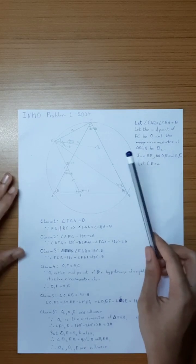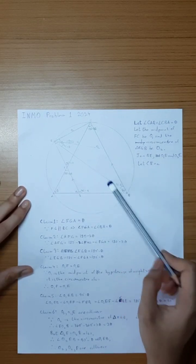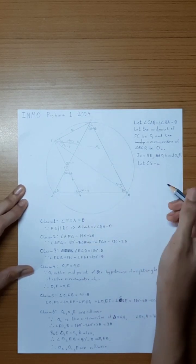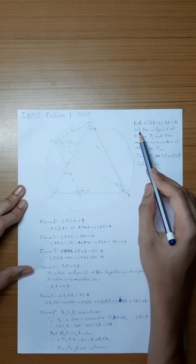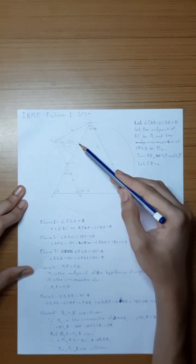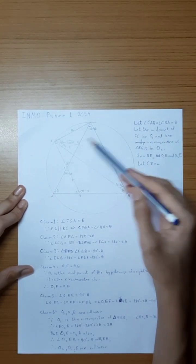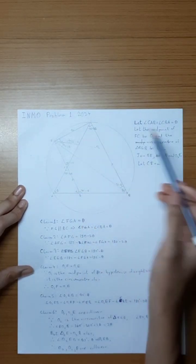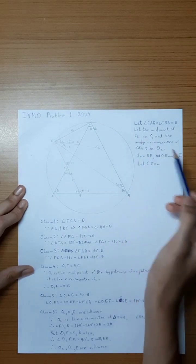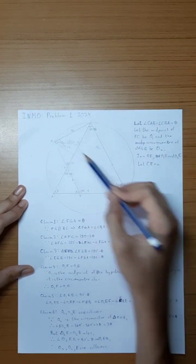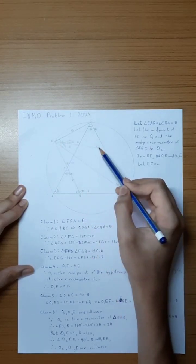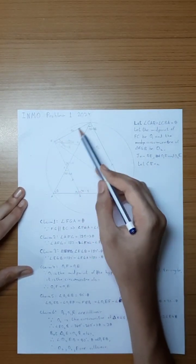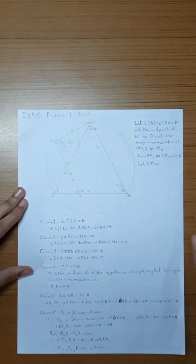Let us assume that angle CAB, which equals angle CBA, is equal to theta as shown in the figure. Let the midpoint of FC be O1 and the circumcenter of triangle EGB be O2. We will now join BE, O1E, and O2E, and let the length of line segment CE be A.